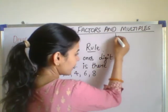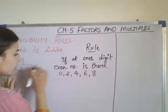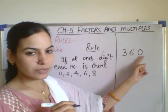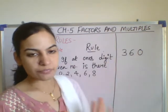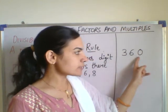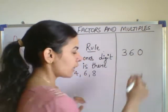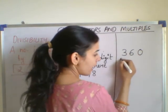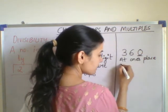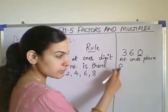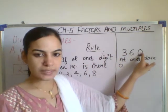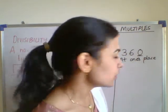I am taking the number 360. Without dividing, by the rule itself, we have to check whether 360 is divisible by 2 or not. At the one's place, 0 is there. 0 is an even number, so 360 is divisible by 2 because at the one's place 0 is there.